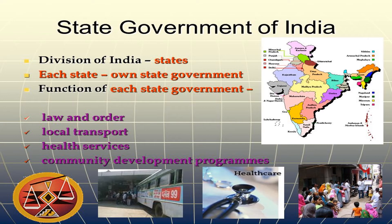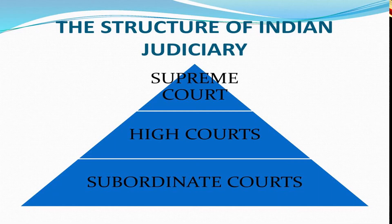Within the law, the state government can take decisions on behalf of the people. If the state government has a problem, then they should inform the officer appointed by the Prime Minister in every state. This officer will convey the message of the state government to the central government. This officer is known as the Governor.